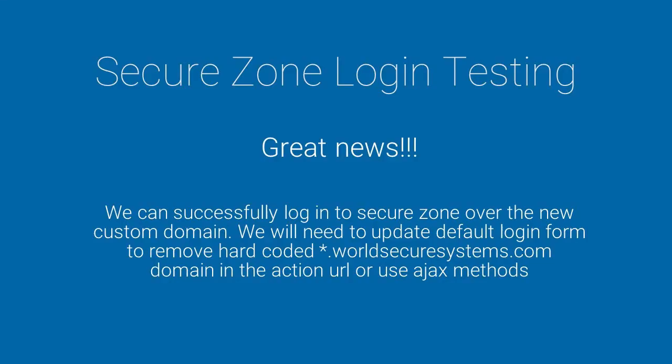In conclusion, we have some great news: we can successfully log in to secure zones over the new custom domain. However, if you are going to use the default BC login form, you will need to remove the worldsecuresystems domain prepended to the action URL in order for it to log you in over the custom secure domain. If you need it to log users in to both the new custom secure domain and the worldsecuresystems domain, you will need to use the AJAX method, which I will hopefully be releasing an update to soon. In the meantime, if you need both domains, you will need to redirect users to the worldsecuresystems domain and ask them to log in again. Hopefully BC will make updates so their default login form logs you into both domains. Thank you for watching — this has been Scott Shuffler with another BC Academy tutorial.